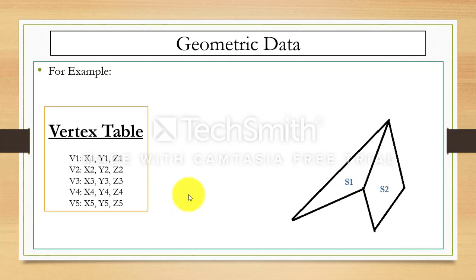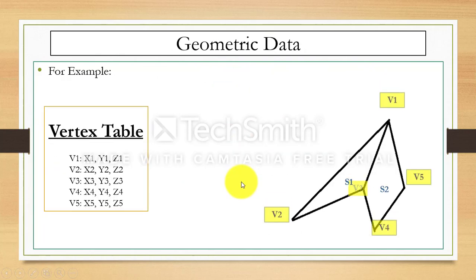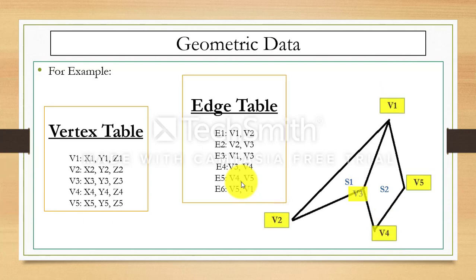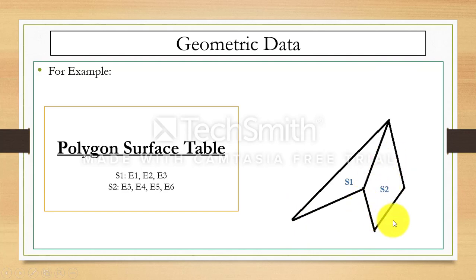So we need to compute vertices and edges, and that is why we use the polygon surface table for boundary representation. We have two surfaces, s1 and s2, that can be represented by boundaries — that is, edges. Surface s1 is represented by e1, e2, e3, and surface s2 by e3, e4, e5, e6. That's all about polygon surfaces and their table representation.